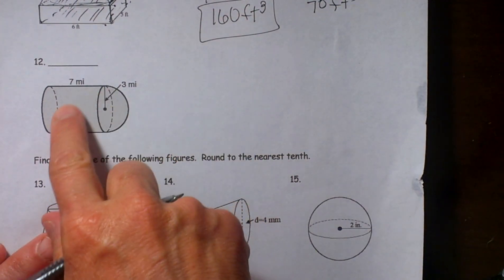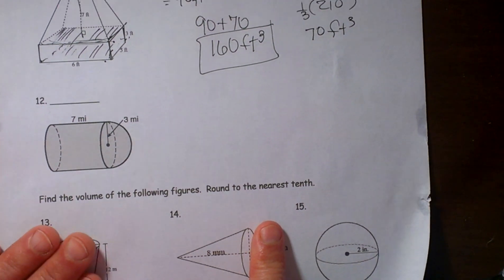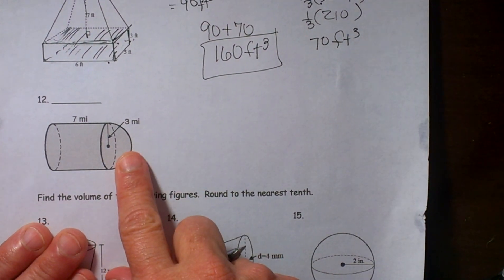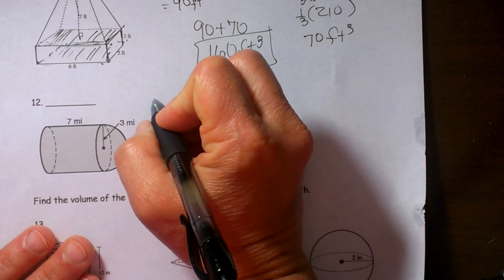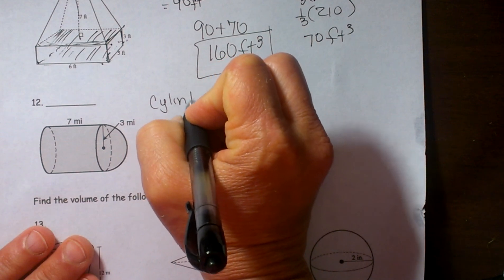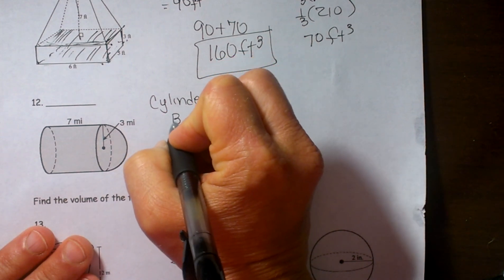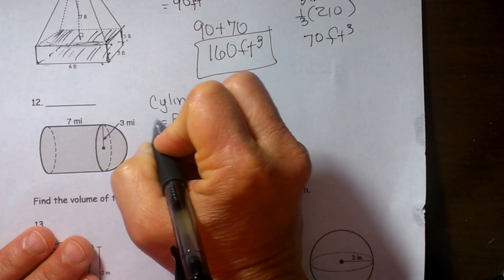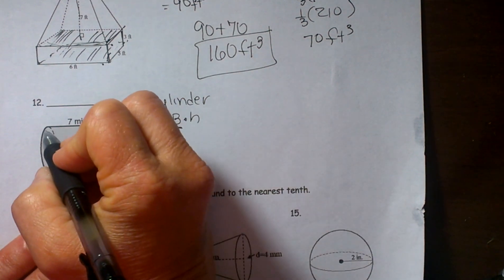Ok let's look at one that involves cylinders and spheres. So this one is a little bit different, a cylinder has a volume that is the base area times the height. Ok but on a cylinder the base is a circle.